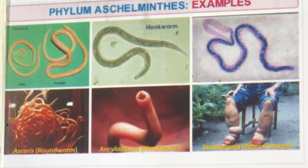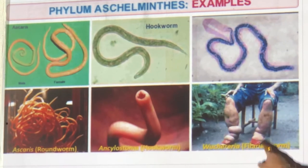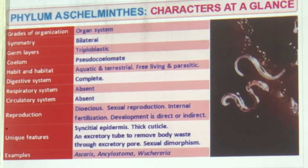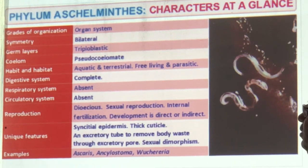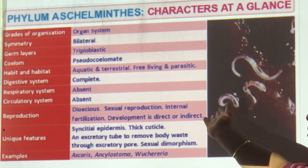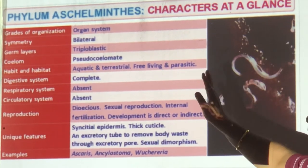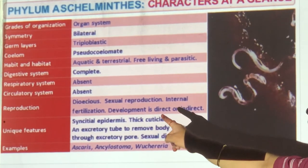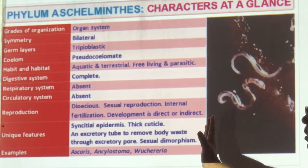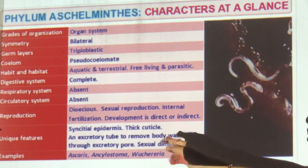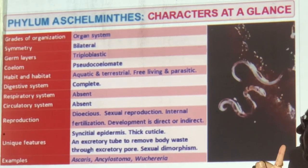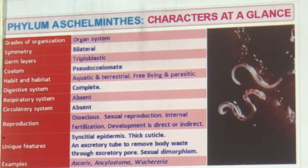Examples: Ascaris, Wuchereria (causes elephantiasis — elephant foot disease). Revision: organ system, bilateral symmetry, three germ layers, false coelom (pseudocoelomate), may be aquatic or terrestrial, free-living or parasitic. Complete digestive system with mouth and anus. No respiratory or circulatory system. Reproduction: dioecious, sexual, internal fertilization, may or may not have larvae. Unique: syncytial multinucleate epidermis, thick cuticle, excretory tube with excretory pore, sexual dimorphism. Examples: Ascaris, Wuchereria.